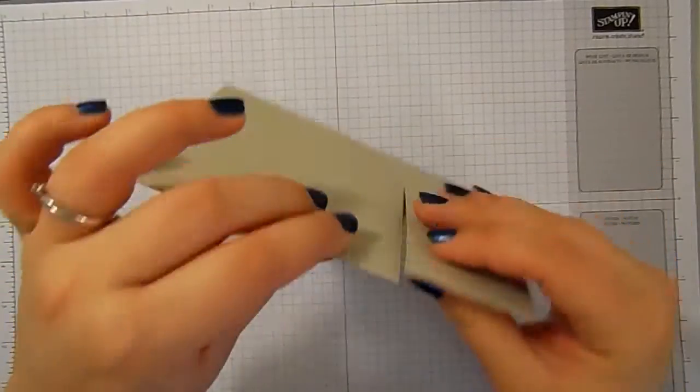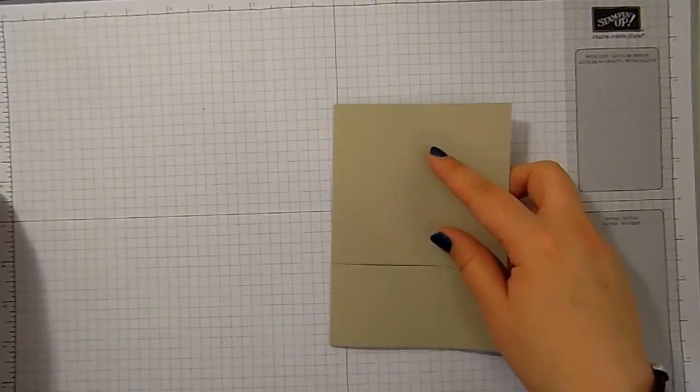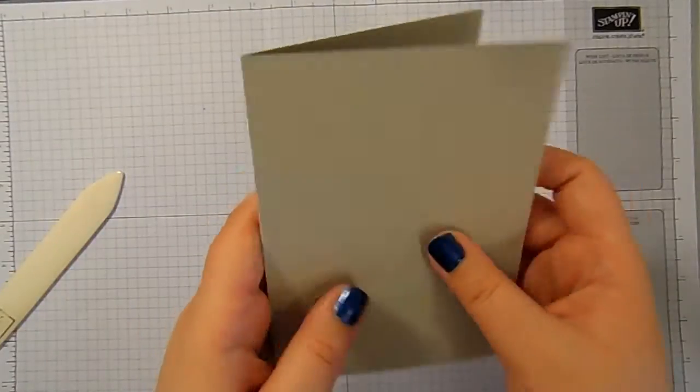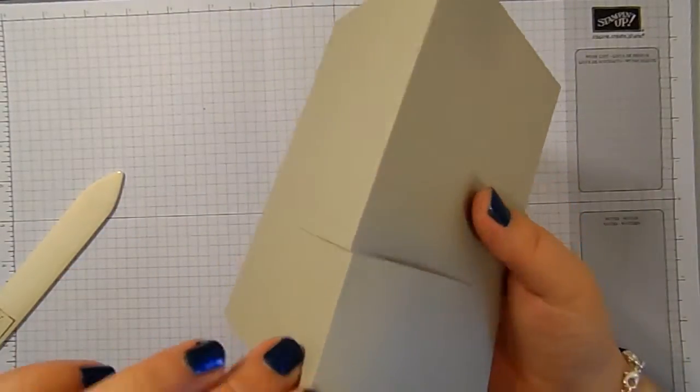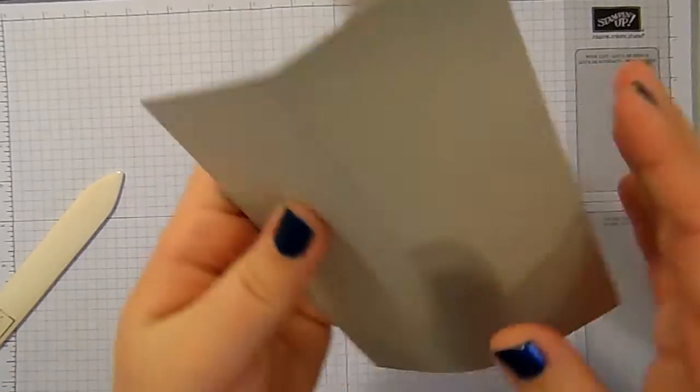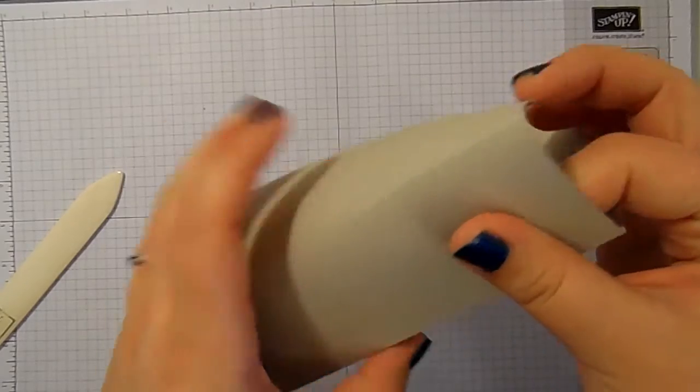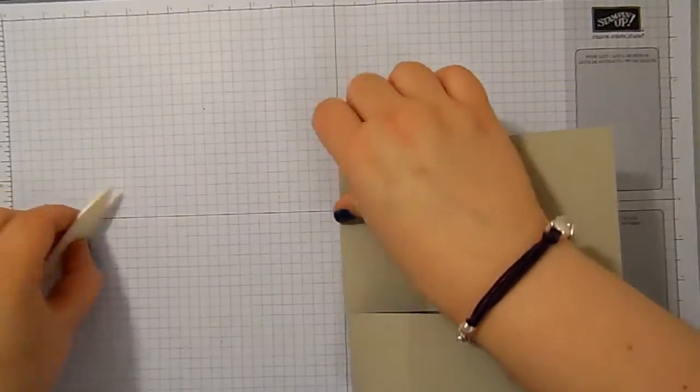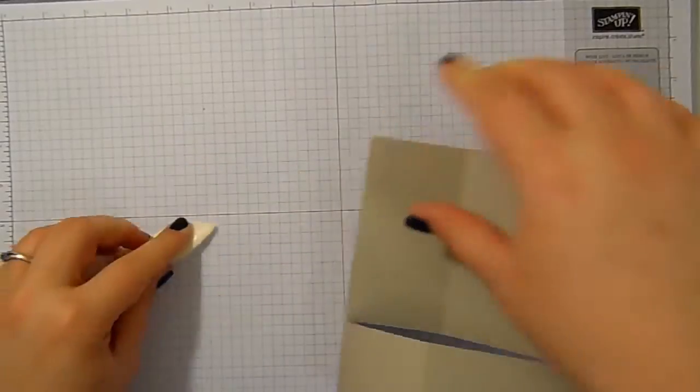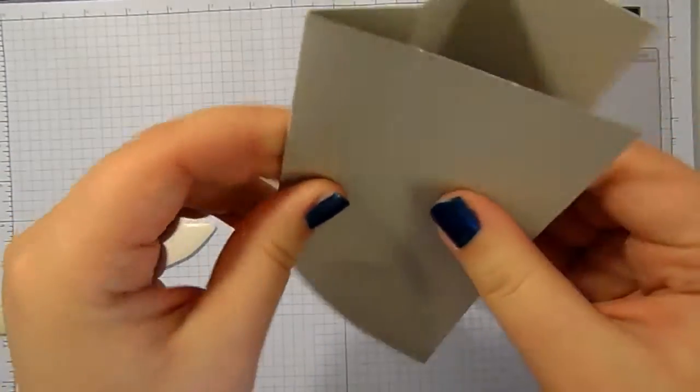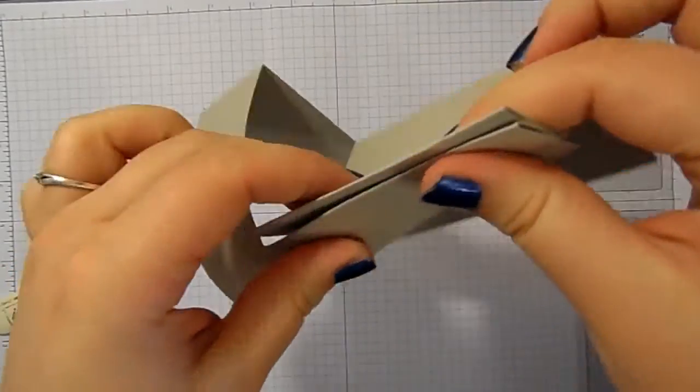And then we've got a series of mountain and valley folds to do. So I'm going to just burnish that one. This here is always a mountain fold. Our first one backward, our first one which would be the back of the card, is a mountain, which means that's a valley, next one's a mountain, next one's a valley, next one's a mountain.